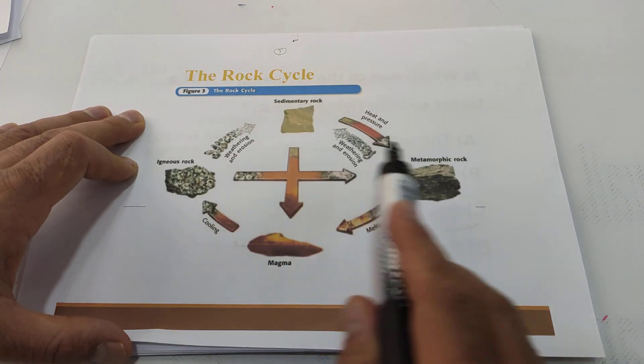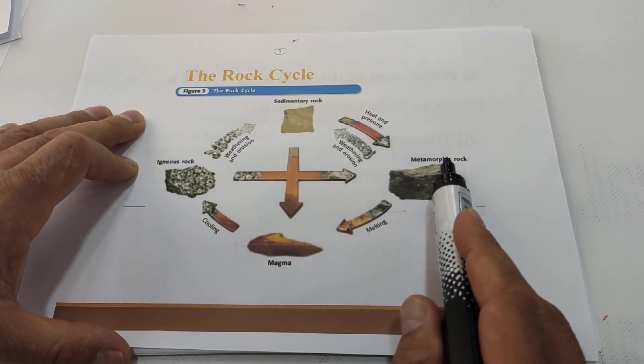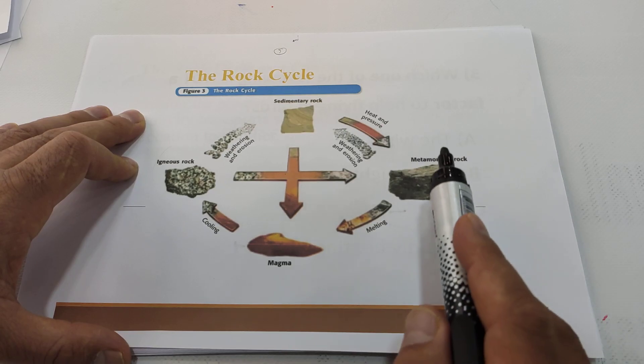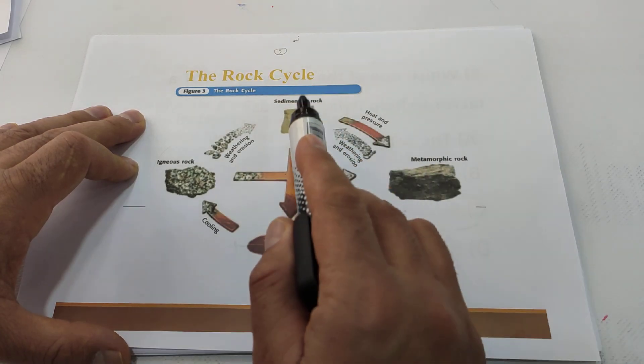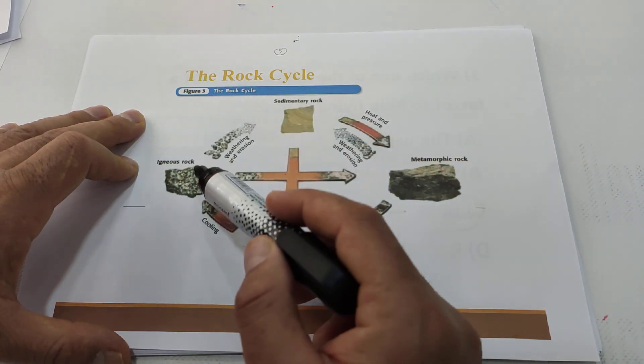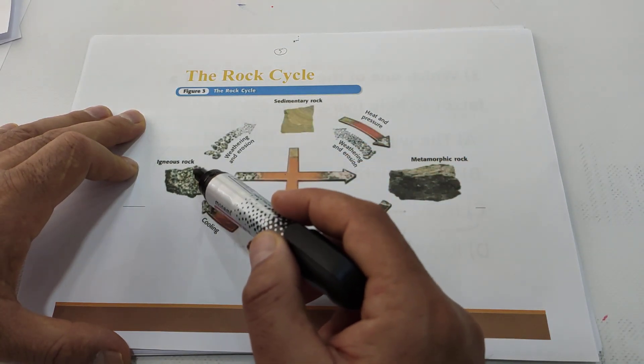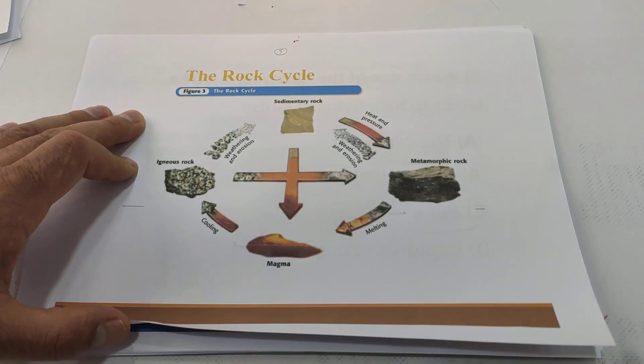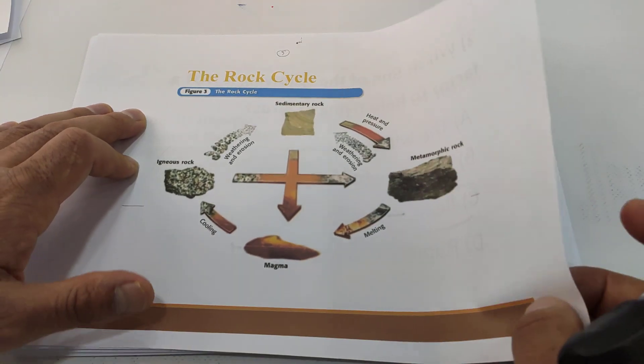So igneous rocks change into metamorphic rocks, metamorphic rocks change into sedimentary rocks, sedimentary rocks change into igneous rocks. They can change each other.